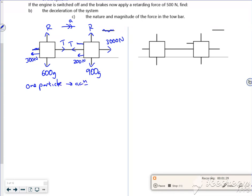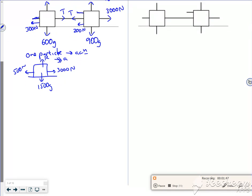So I've got a whole thing here. It's 1500g. It's got 3000 pushing it and a combined 500 stopping it with a normal reaction and an acceleration. Okay, you can read that. So F equals ma.